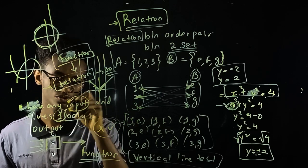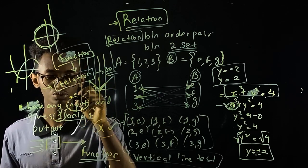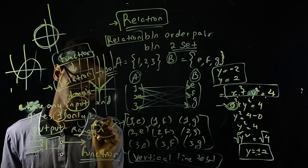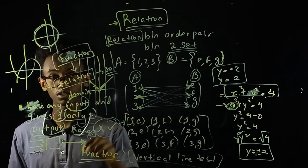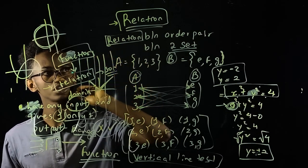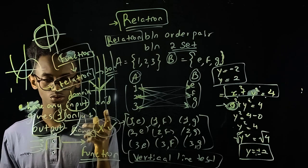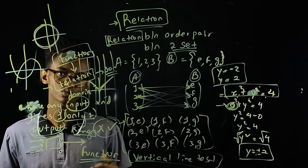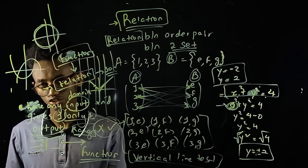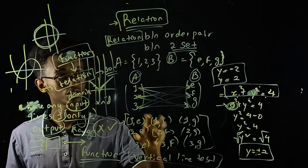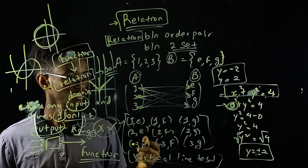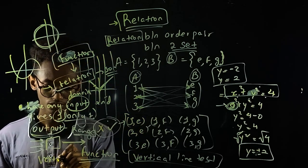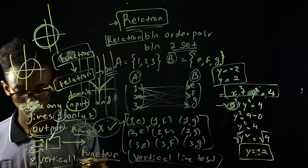Input is the domain. Output is the range. So we have to consider these concepts. All functions are a specific type of relation. We need to know the two different cases — especially for true/false questions. The vertical line test is very important: if a vertical line intersects the graph at more than one point, it is not a function.